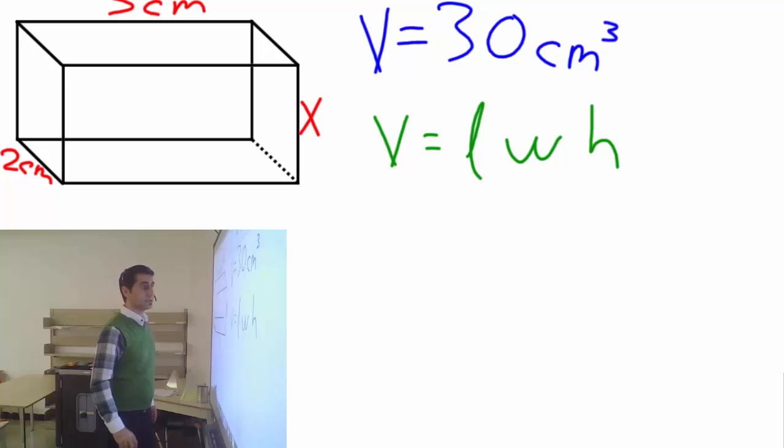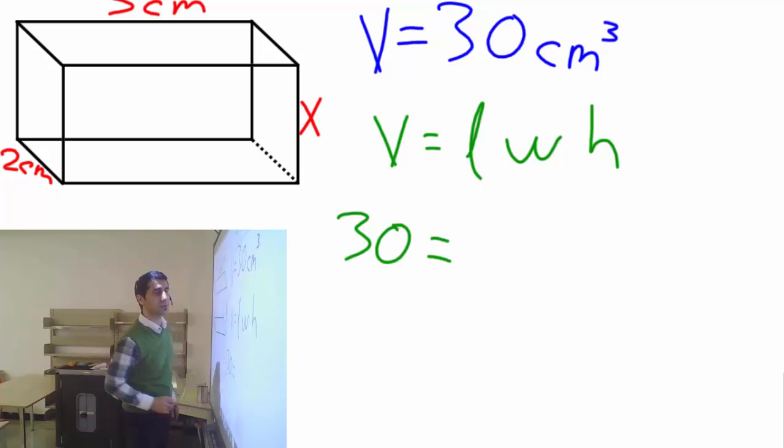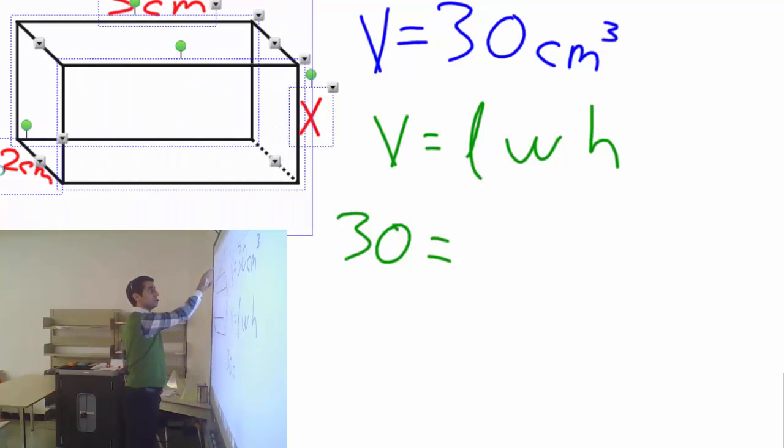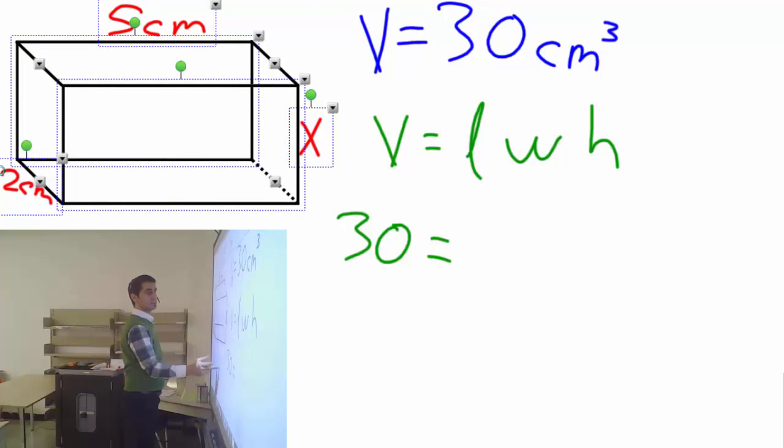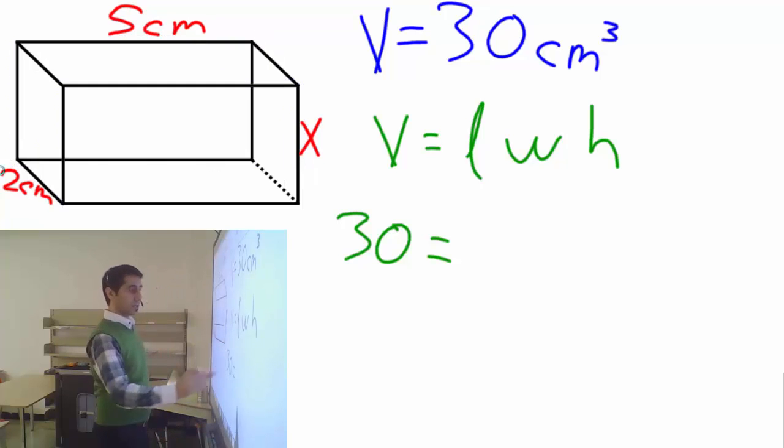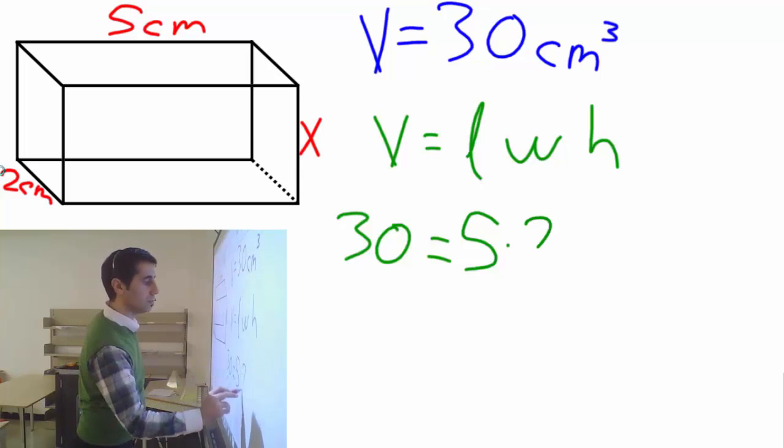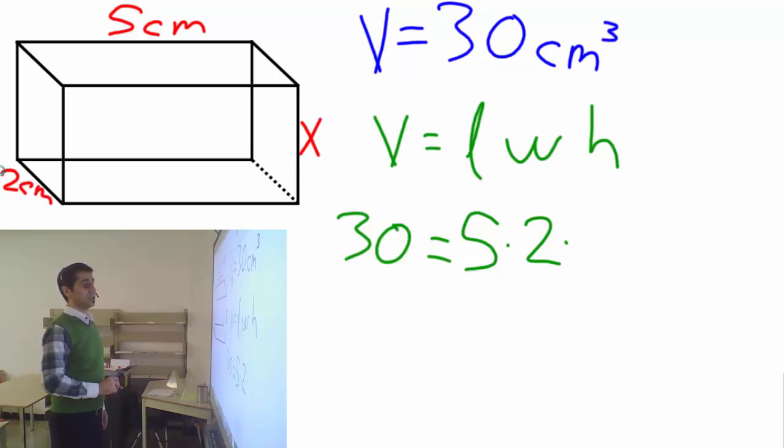Now after you write down the formula, let's write down what we know. I know the volume is 30 equals, and in this case l is 5 times w is 2 times h.